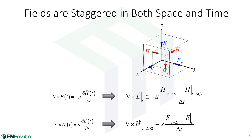When we inject waves, these field components are in different locations and will be slightly out of phase — we need to compensate for that. They're also at slightly different time steps, introducing a slight phase delay between E and H. We absolutely have to account for all of this or problems arise.